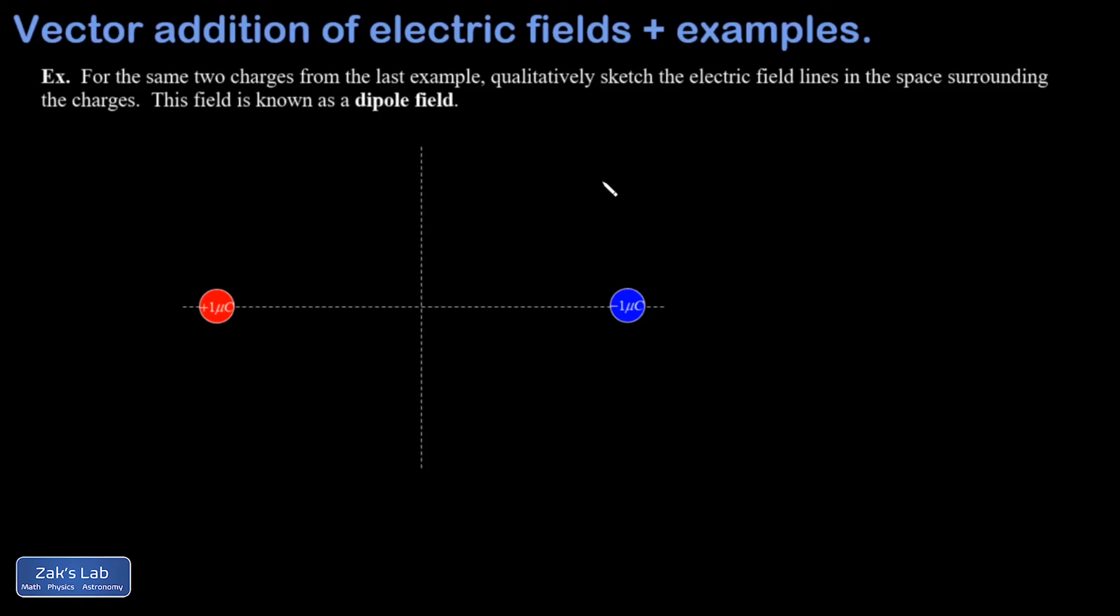In the next example, we're looking at the same dipole distribution. So there's one positive charge and one negative charge, and we're asked to qualitatively sketch the electric field lines in all the space surrounding the charges.